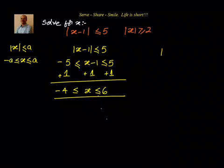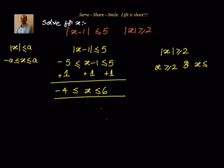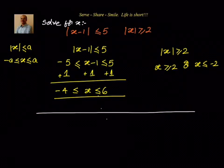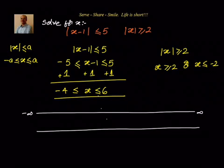Now let us go to the other condition: absolute value of x is greater than or equal to 2. The meaning of that is either x is greater than or equal to 2, or x is less than or equal to minus 2. This is what we learned from the last videos. So let us go ahead and plot the number line for both conditions and see how it will come. We need two number lines — one for the first condition and one for the second — then take the common values, the intersection of these two.